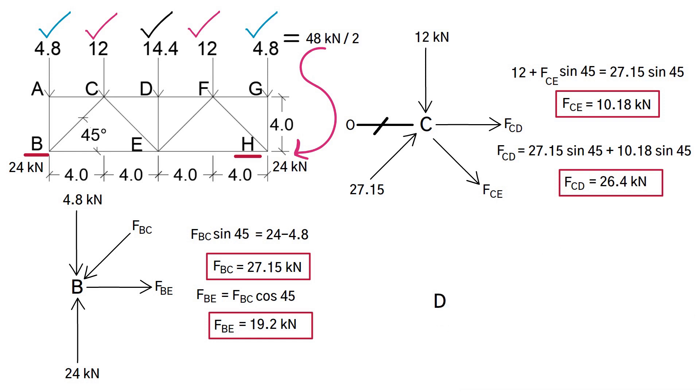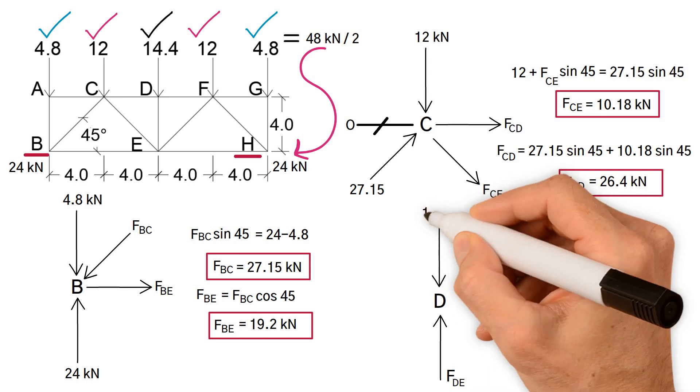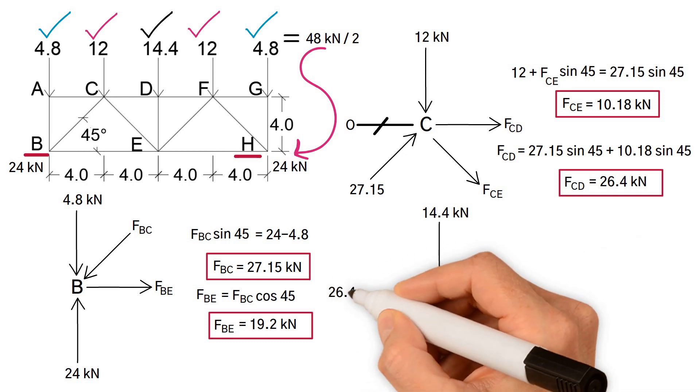Finally, joint D. In the vertical direction, Fde should be equal to the load P3, 14.4 kilonewtons. In the horizontal direction, Fdf should be equal to Fcd, 26.4 kilonewtons.